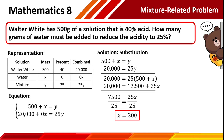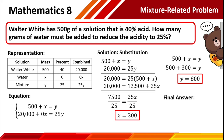Now, to get the value of y, just use the first equation: 500 plus x equals y. Substituting the value of x, we have 500 plus 300 equals y, and 500 plus 300 equals 800. So y equals 800. In this given problem, we are asked to find how many grams of water must be added to reduce the acidity to 25%, so we are looking for the value of x. The answer is: 300 grams of water must be added to reduce the acidity to 25%.